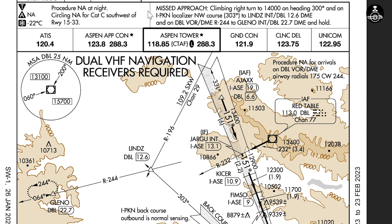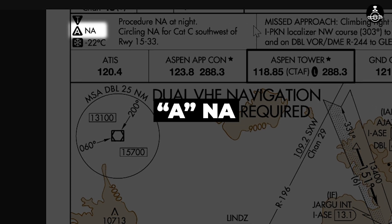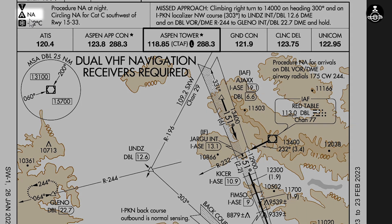For this particular video I'm focusing only on instrument approach plates, but there will be a video coming soon that talks about departure and arrival charts as well. Let's get started. The first symbol is the ANA that you see at the top — ANA stands for Alternate Not Available.